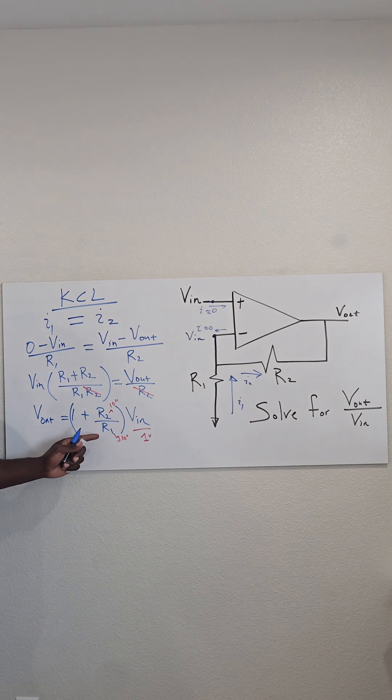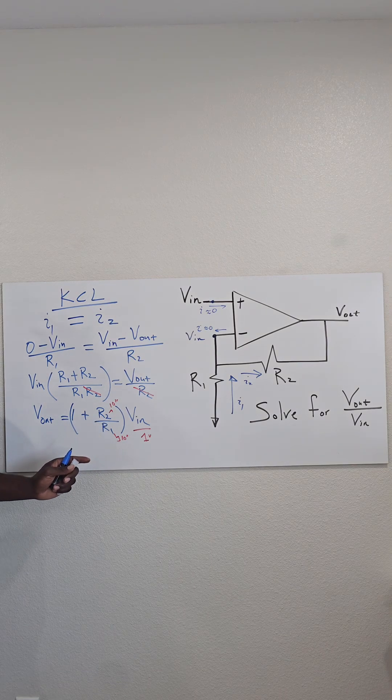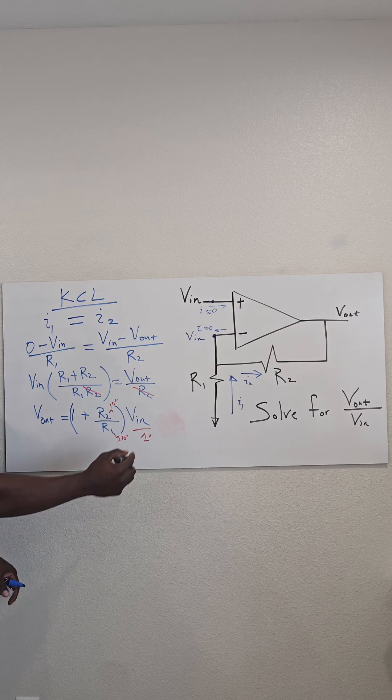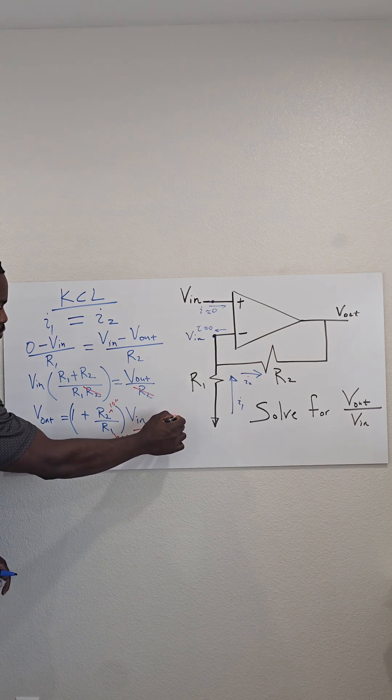10k over 10k is 1, 1 plus 1 is 2 times 1, my Vout will be amplified to be 2 volts.